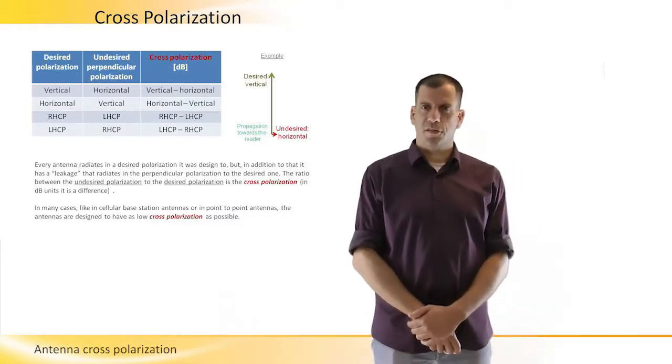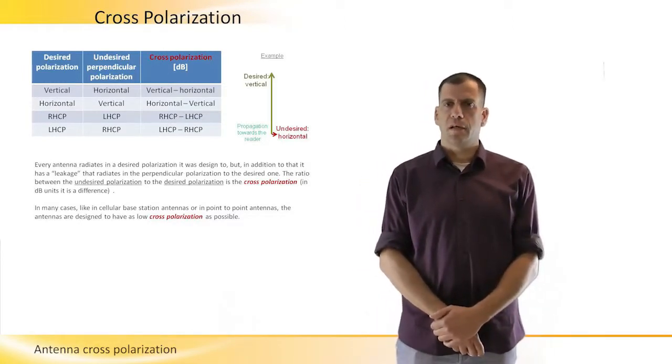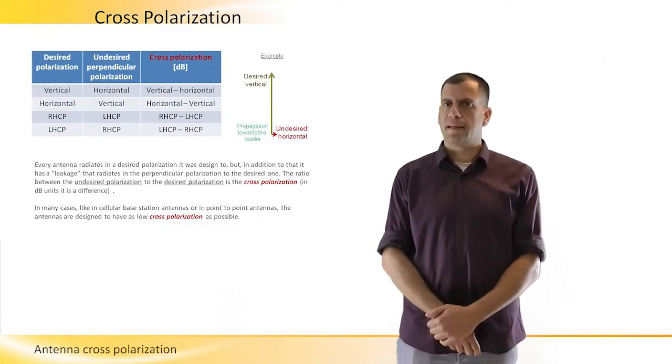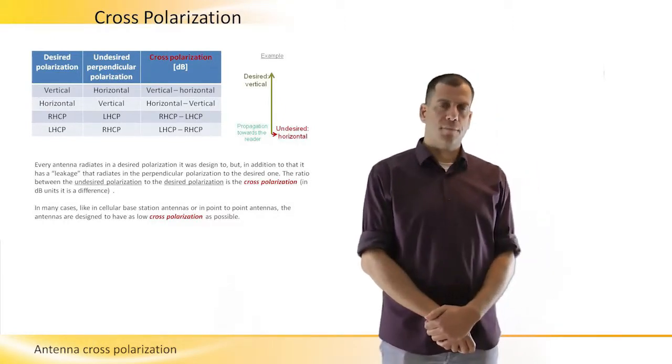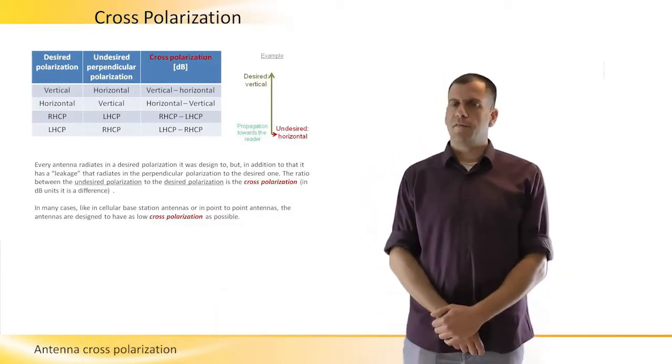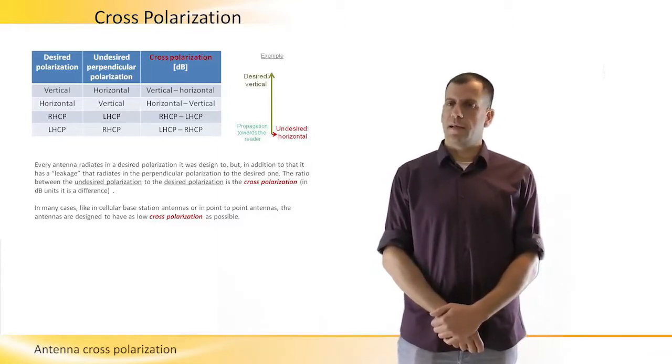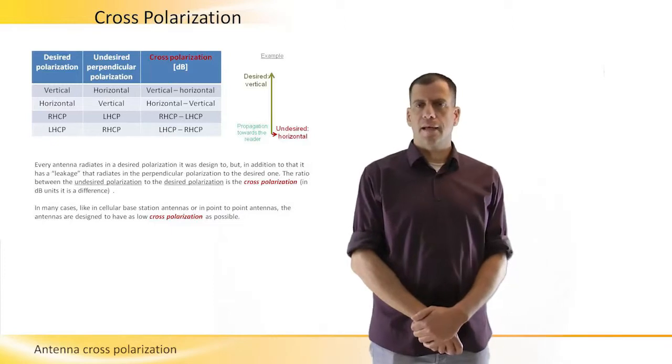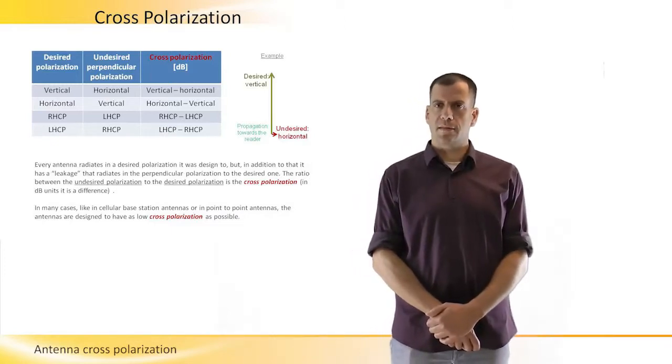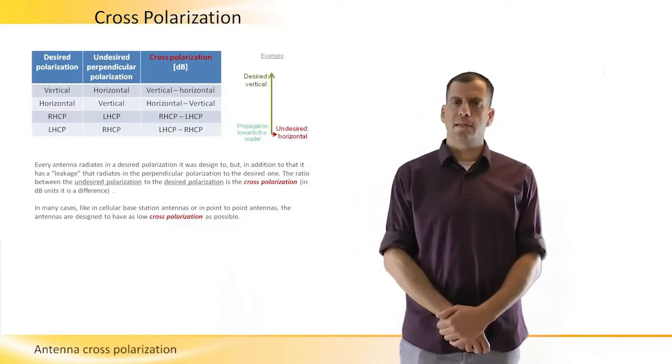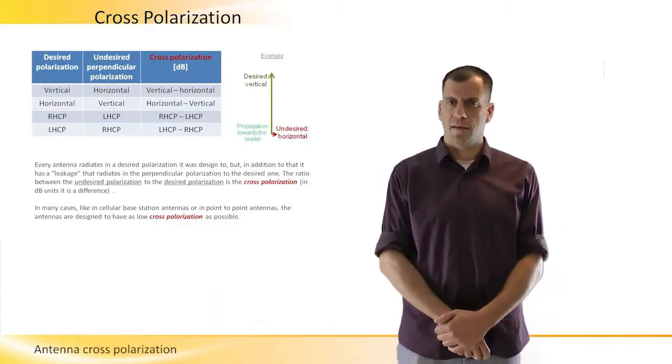The cross-polarization is always measured relatively to the antenna gain. For example, if the peak level of the antenna is 10 dBi, the gain of the antenna, and the peak gain of the cross-polarization is minus 10 dBi, then we say that the cross-polarization is minus 20 dBi, because 10 minus minus 10 is plus 20.